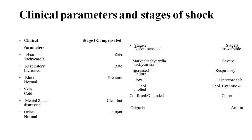Clinical parameters and stages of shock: In the compensated stage — heart rate: tachycardia; respiratory rate: increased; blood pressure: normal; skin becomes cold; mental status: distress; urine output: normal. In the decompensated stage — marked tachycardia; respiration increased; blood pressure low; skin is cool and mottled; mental state is confused or obtunded; urine output is oliguria.